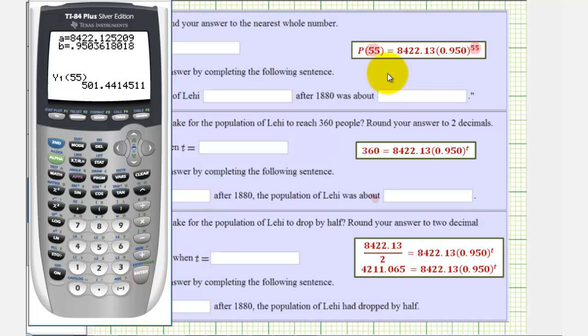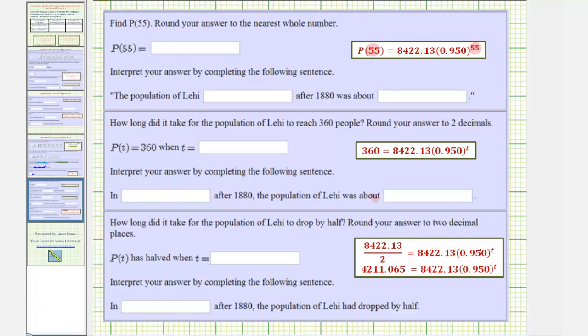So the function value to the nearest whole number would be 501. Which means the population of Lehi, 55 years, because t is 55 here, after 1880, was about 501 people.